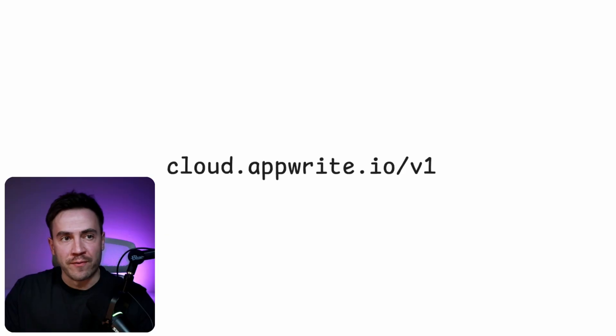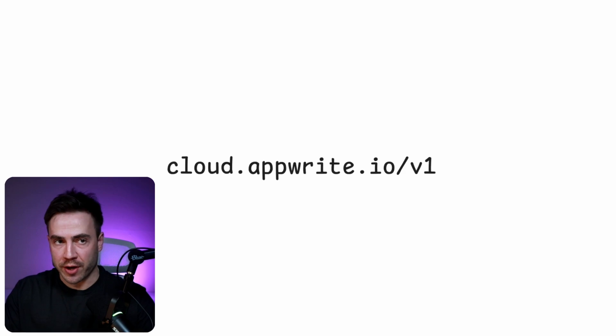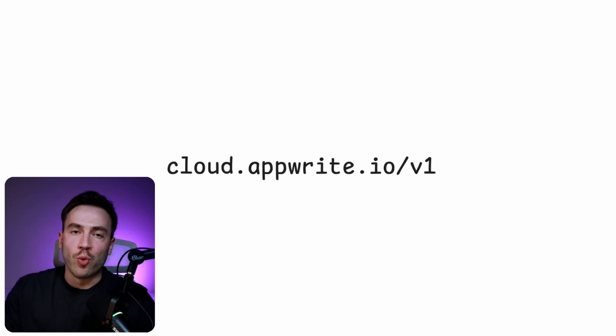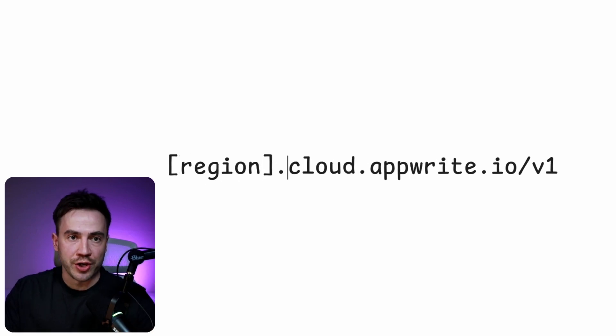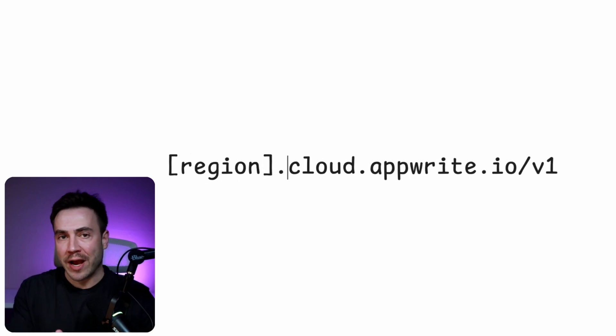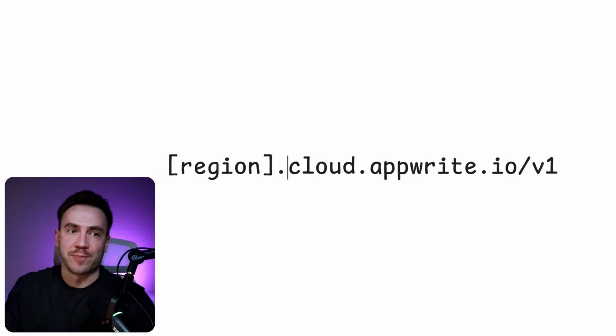The biggest change you're going to see from a technical standpoint is going to be the endpoint which you use to connect to your project. Previously, we had one endpoint for AppRite Cloud, and that was just cloud.apprite.io/v1. However, with these new regions, you're going to want to make sure you prefix that endpoint with a specific region in order to actually connect to that specific project.